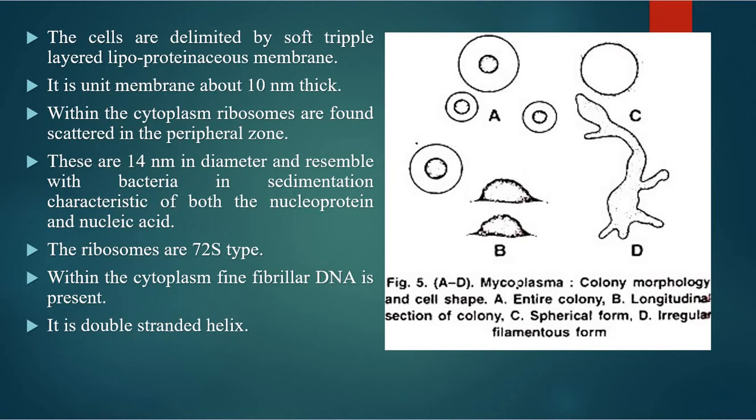The cells are delimited by a soft triple-layered lipoproteinaceous membrane — a unit membrane about 10 nm thick. Within the cytoplasm, ribosomes are found scattered in the peripheral zone. These are 14 nm in diameter and resemble bacteria in sedimentation characteristics of both nucleoprotein and nucleic acid. Ribosomes are 70S type. Within the cytoplasm, fine DNA is present as a double-stranded helix.